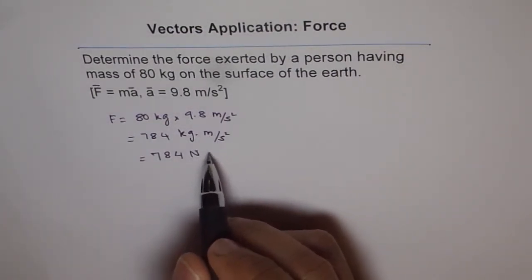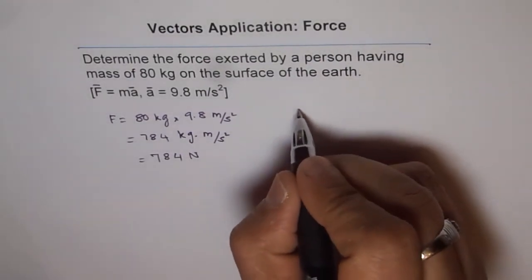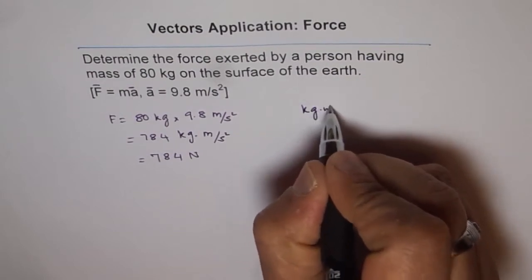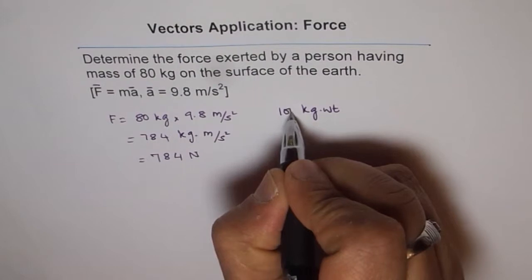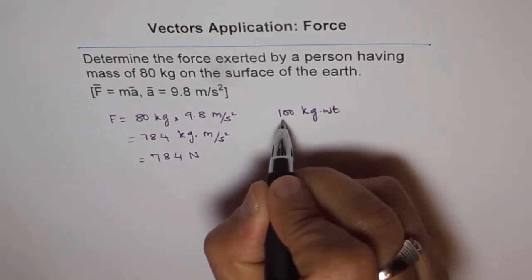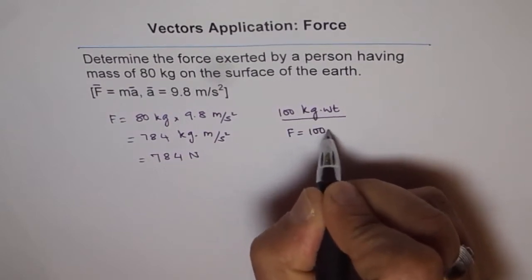That is 1 newton. So that is kind of a conversion factor. Now, in examples, if I say kg weight, one example has got 100 kg weight. In that case, what is the force? In that case, force equals 100 newtons.